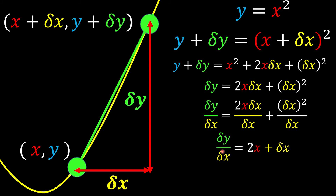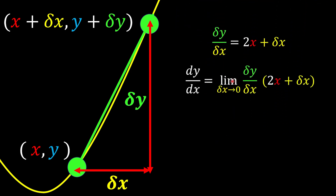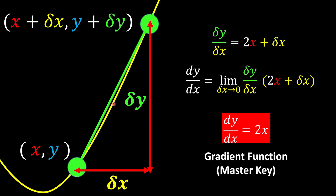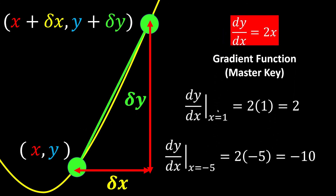This is still not good enough because delta x is still present. So we apply the limit function, letting delta x approach 0. When delta x becomes 0, that term disappears, and we have our gradient function: 2x. This gradient function acts like a master key — we can find the gradient at any point we want. For example, when x equals 1, substitute into the equation: the gradient is 2. When x equals negative 5, substitute: the gradient is negative 10.